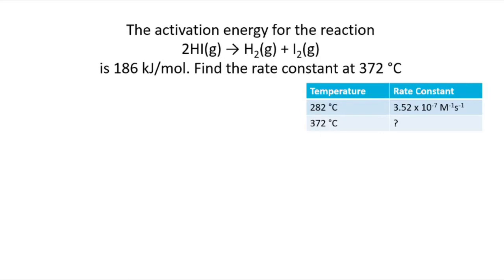So here's a reaction that isn't particularly important for anything in real life, but does have some nice chemical kinetics. The activation energy for this reaction, where two HI's become H2 and I2, is 186 kJ per mole. Let's find the rate constant at 372 degrees C. So we said that in order to find the rate constant at a different temperature, we'll use this form that has two rate constants and activation energy over R and two temperatures.